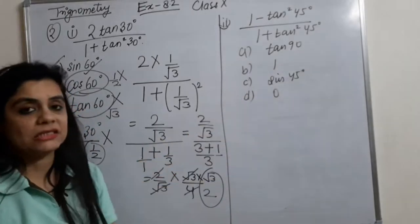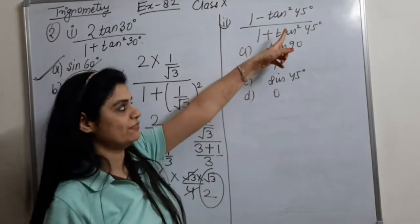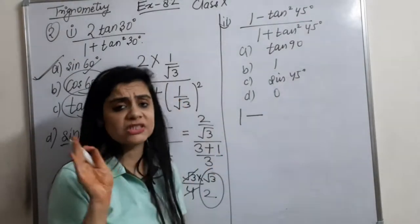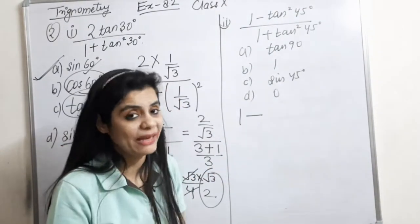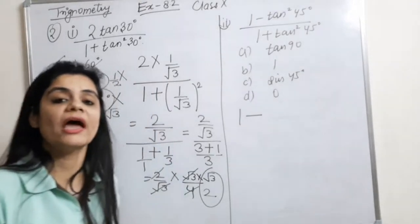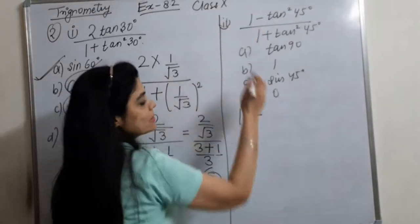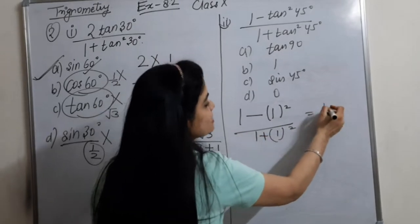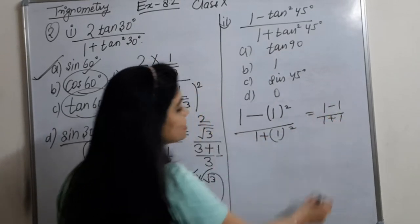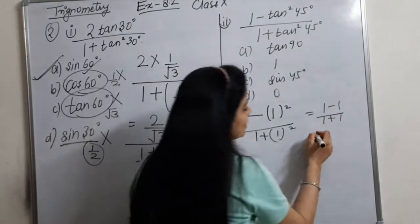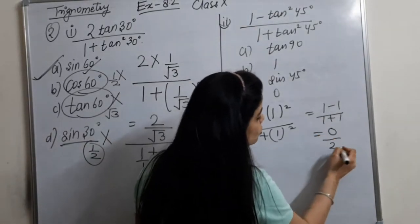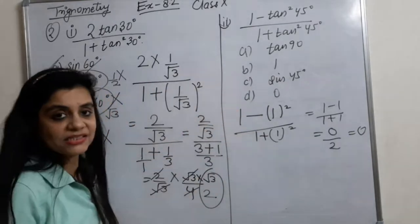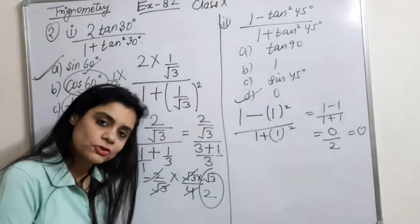Next part: 1 minus tan²45 upon 1 plus tan²45. Tan 45 is the most easiest value to learn, as I told you before — tan 45 equals 1. So we get 1 minus 1 squared upon 1 plus 1 squared, which is 1 minus 1 upon 1 plus 1, which is 0 upon 2, which equals 0. So 0 is our answer — option D is the correct option.